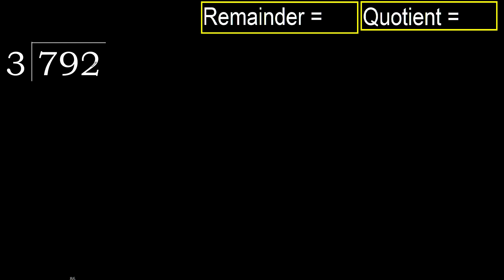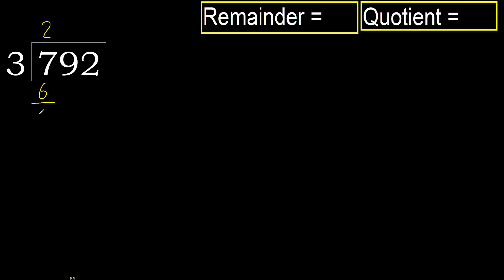792 divided by 3. 7 — 3 multiplied by which number is nearest to 7 but not greater? 3 multiplied by 3 is 9, which is greater. Multiplied by 2 is 6. 6 is not greater, so subtract: 7 minus 6 is 1.